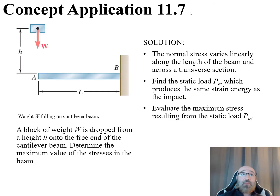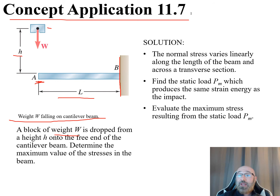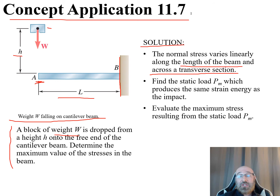In concept application 11.7, a block of weight W is dropped from height H onto the free end at point A of a cantilever beam fixed at point B with length L. We need to determine the maximum stress in the beam. Since normal stress varies linearly along the length and across the transverse section, we find a static load P_M producing the same energy as the impact, then evaluate the maximum stress from that static load.